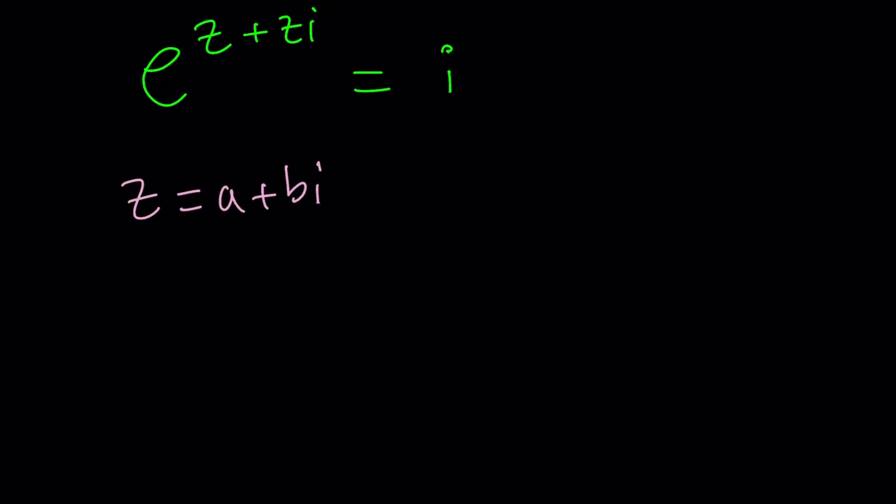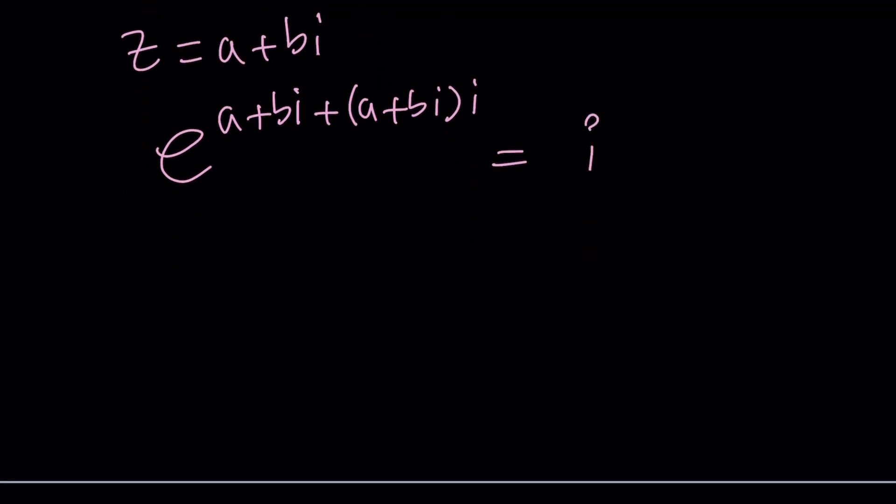And then we get something like this. e to the power a plus bi plus a plus bi all multiply by i and that's equal to i. Interesting. Now we can go ahead and distribute. That gives us ai which is kind of like artificial intelligence right but not.